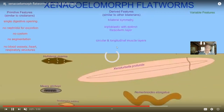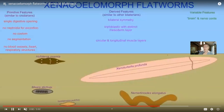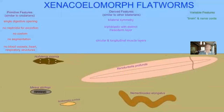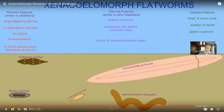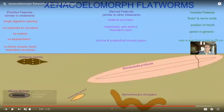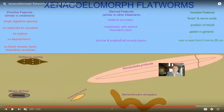Acoels have a third tissue layer — mesoderm — and circular and longitudinal layers of muscle, which we use for peristalsis in the human GI tract to push food downward. Their mouth position is variable: while most have the mouth centrally located, in some it's a little closer to the head. Their genes and genome size can vary, and their size ranges from two millimeters to 20 centimeters.